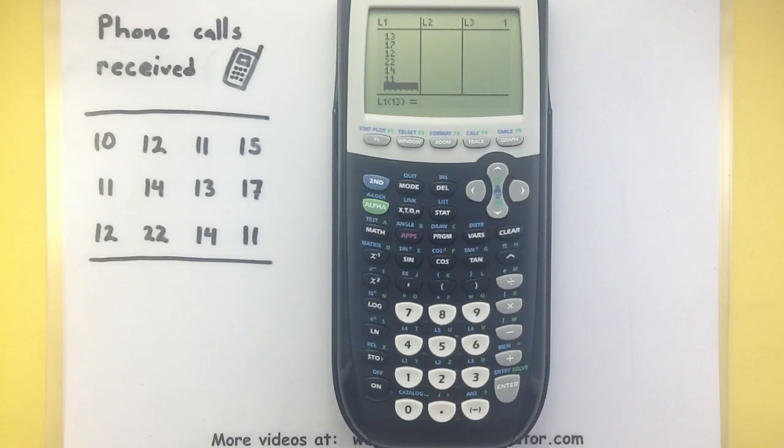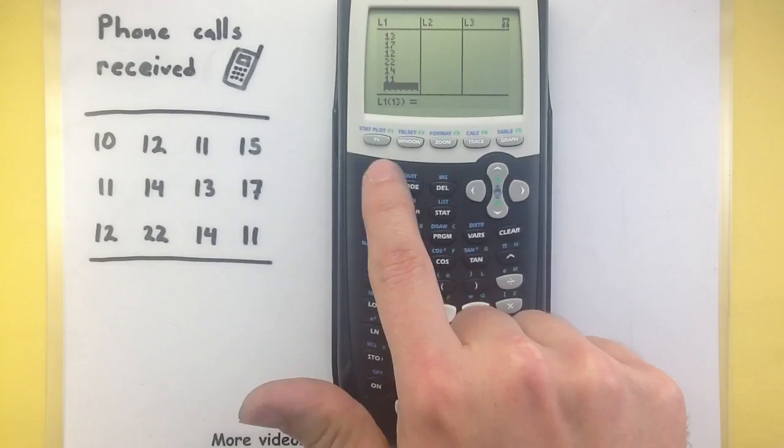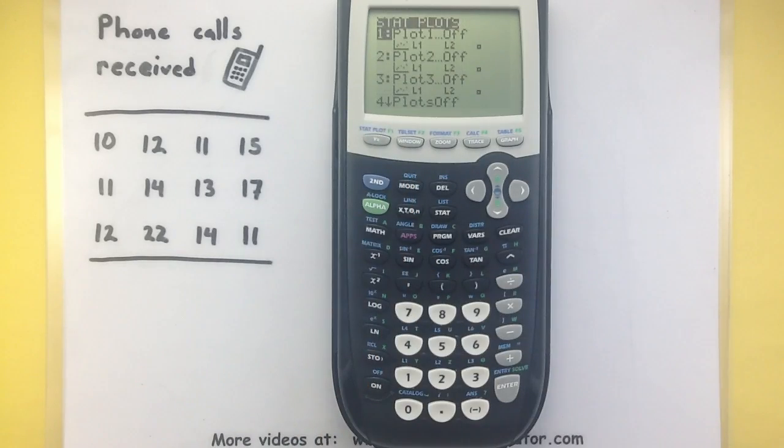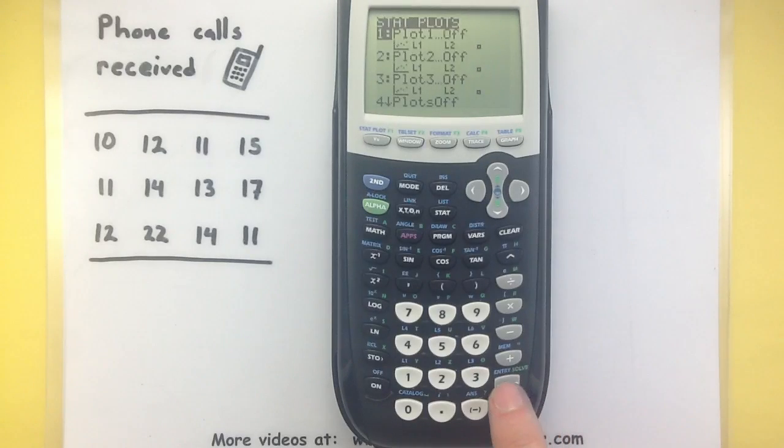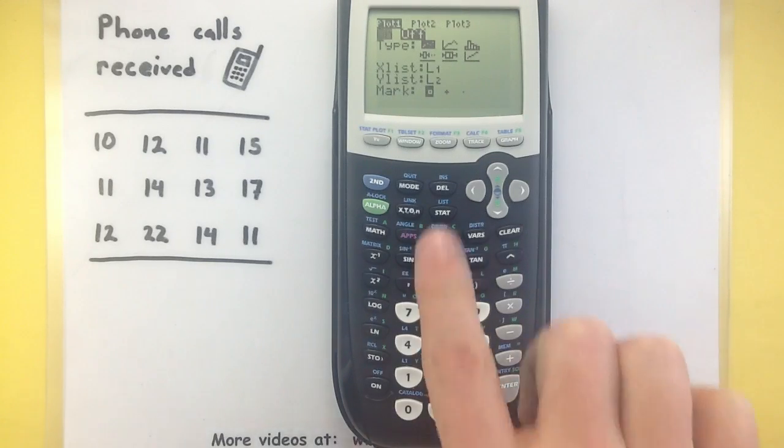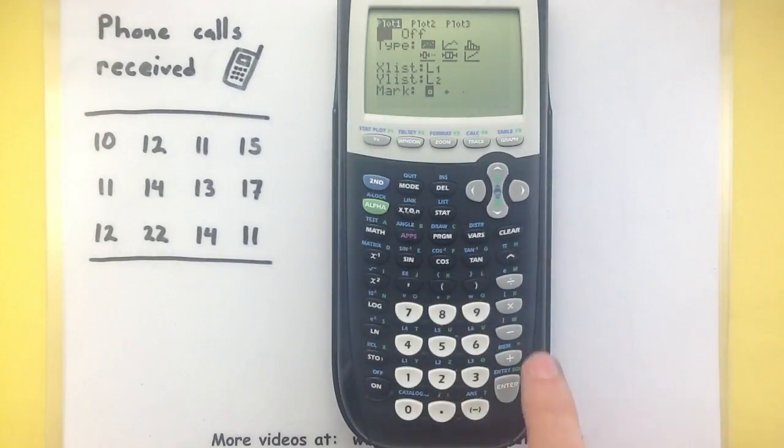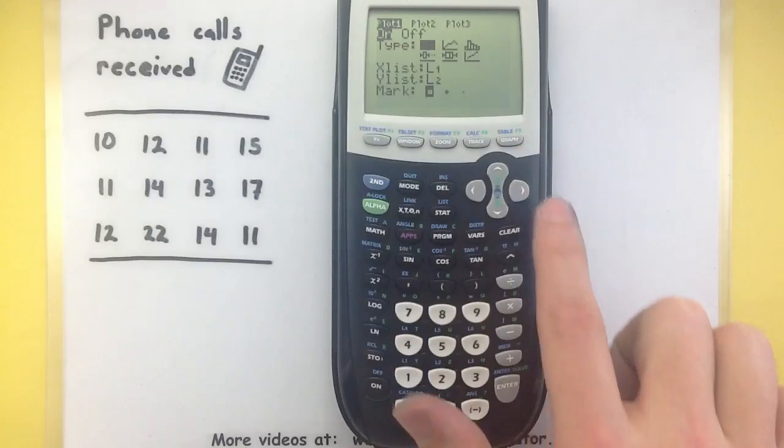Now we need to set our stat plot to make sure that it's set to box and whisker. So press your second button, and then the Y equals, which is for stat plot. Right now all of my plots are turned off, but I'm going to press enter so I can go and set up my options for the first one. So it's blinking on the on, so press enter. Let's go down to our next one. Here's where we get to set the type.